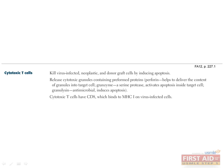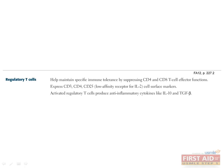Cytotoxic CD8-positive T cells are responsible for destruction of infected, neoplastic, or otherwise disordered cells. They kill these cells by releasing proteins that puncture the cell membrane, as well as activate the apoptotic cascade. They have CD8 on their surfaces, which binds to the MHC1 of infected cells. Regulatory T cells help keep autoimmunity from happening by suppressing unwanted immune activity. They do this by suppressing the CD4 and CD8 T cell functions via anti-inflammatory cytokines like IL-10 and TGF-beta.